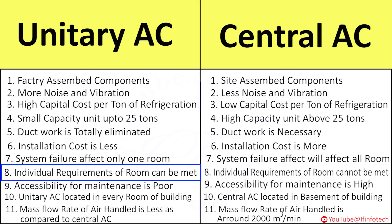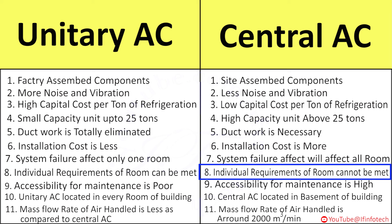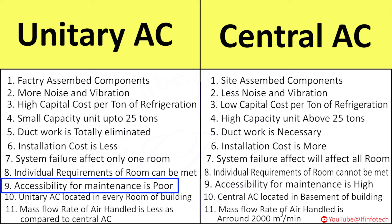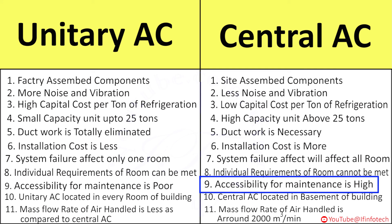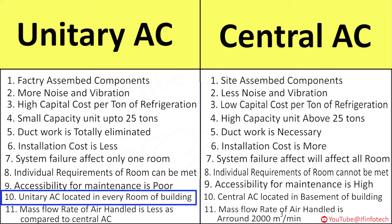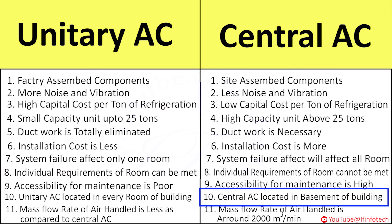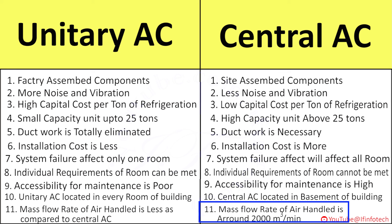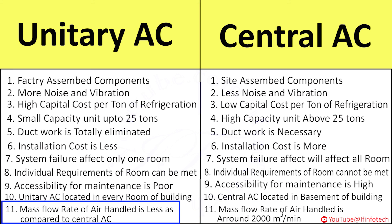In unit AC, the individual requirement of each room can be met, whereas in central AC it cannot. The accessibility for maintenance in unit AC is poorer than in central AC. Unit AC is located in every room of the building, whereas central AC is located in the basement or outside of the building. The mass flow rate of air handled in central AC is around 2000 m³ per minute, whereas in unit AC it is less.